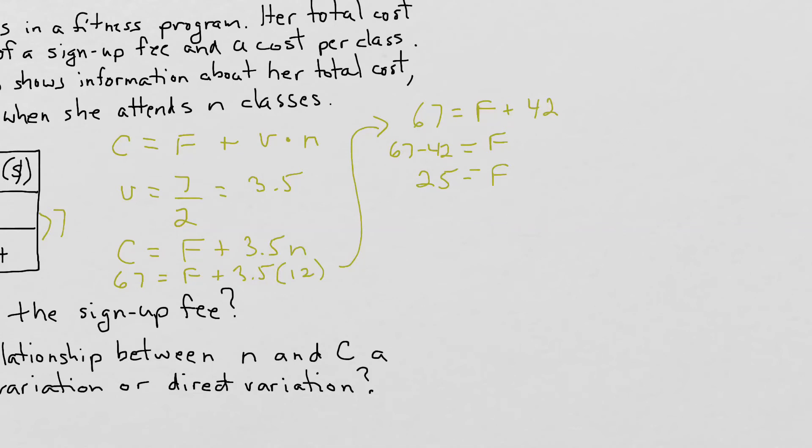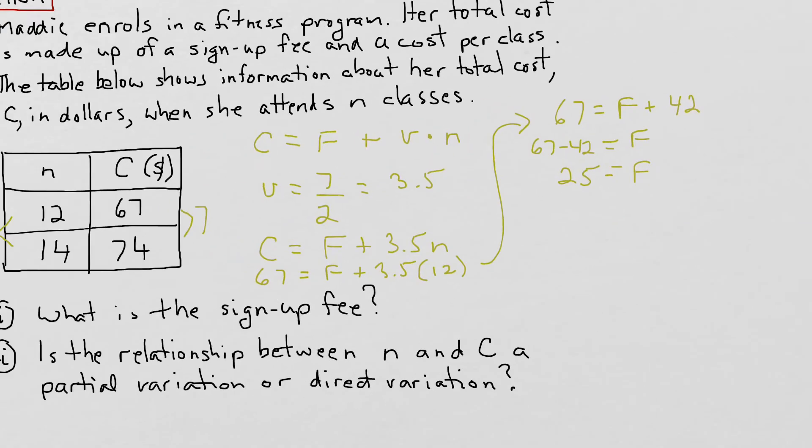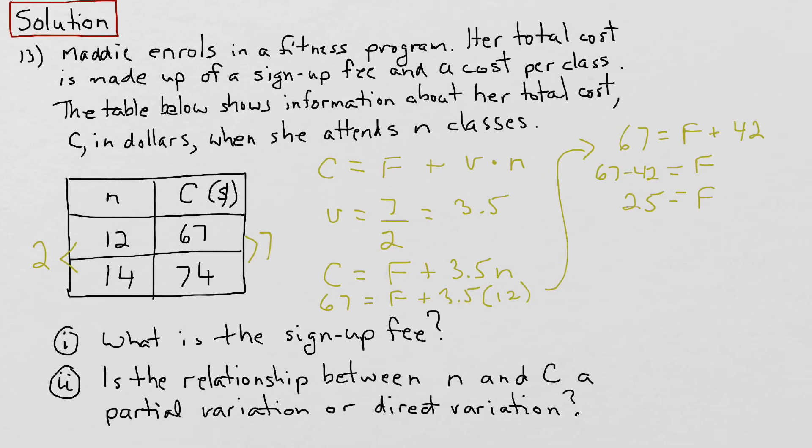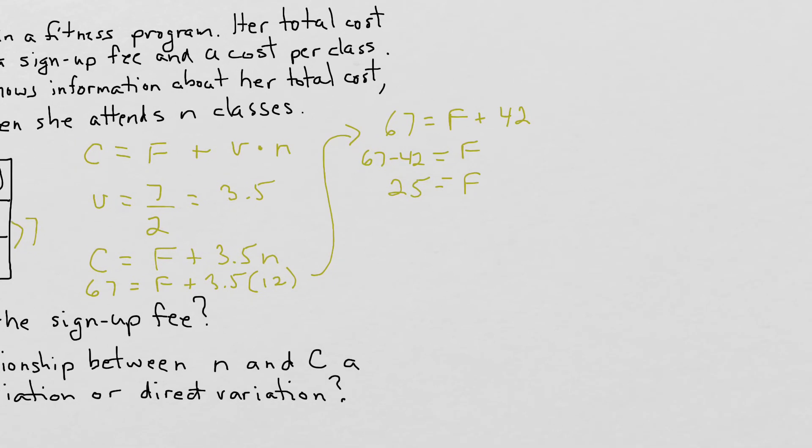We could also verify this answer by substituting the second line into the equation and seeing if it also gives us the same value. Let's do that. We could have said that if she spent $74, F plus 3.5 times 14. And this would give us 74 equals F, 3.5 times 14 is 49. Moving the 49 over to the other side, 74 minus 49 equals F, and again F equals 25. We've verified the result here.